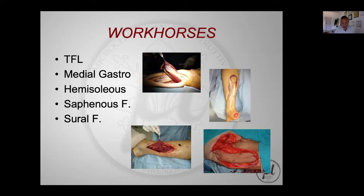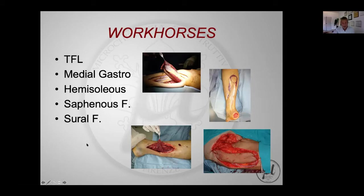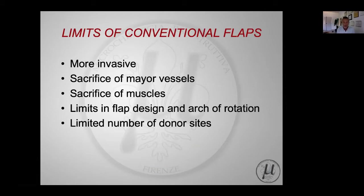Starting from the early days, talking about reconstruction of the lower limb, we must still take into account the workhorses which helped us many times in the past. Most of the local flaps in the lower limb are either myocutaneous or muscle flaps, like the tensor fascia lata, the medial gastrocnemius, and so on. There are few fasciocutaneous conventional flaps, including probably the most used - the Schuller flap - which still has some indication in lower limb reconstruction.